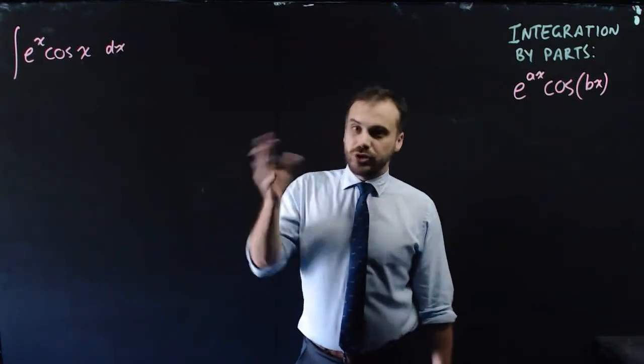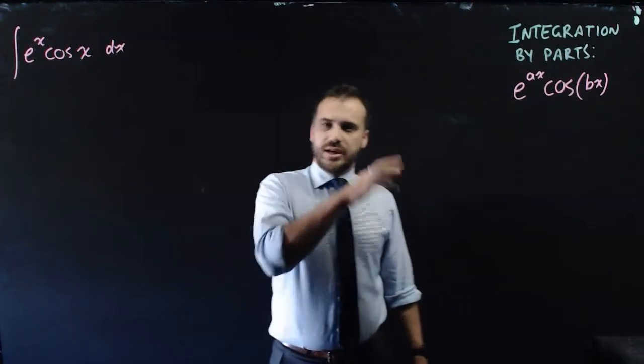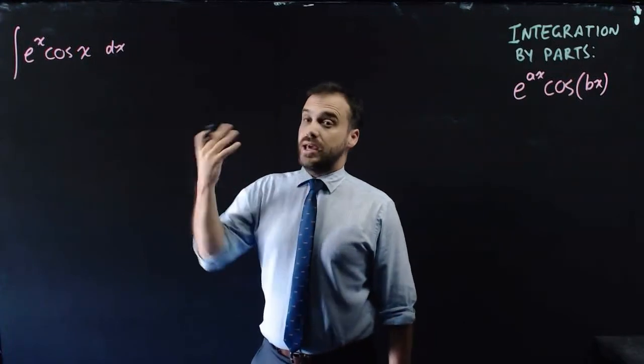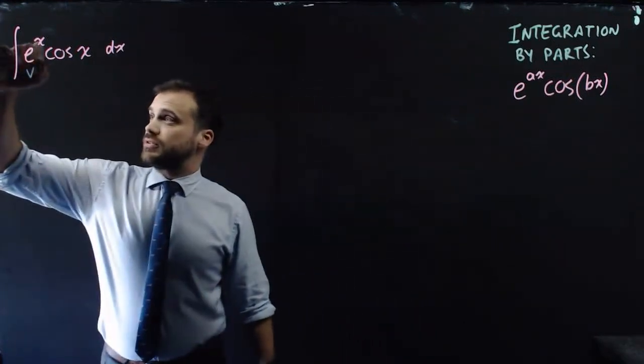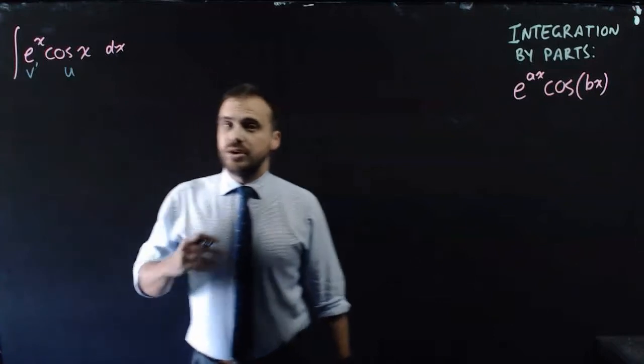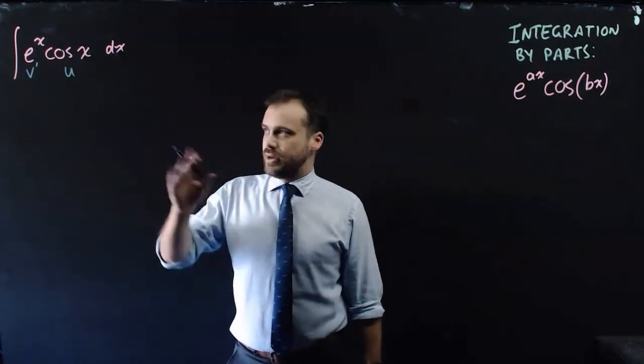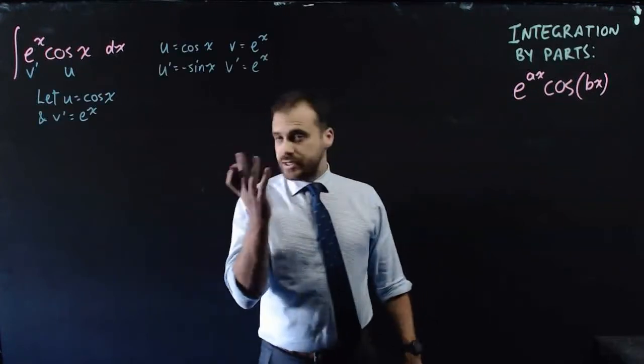First, we need to choose what u and v are going to be. Using our DETAIL acronym, we can say that dv/dx should be an exponential function. So we'll call this v' and we'll call this u. That's going to work. You can look into the future and see that it'll get us where we need to go, but that's what I'm aiming for. So that leads us here.